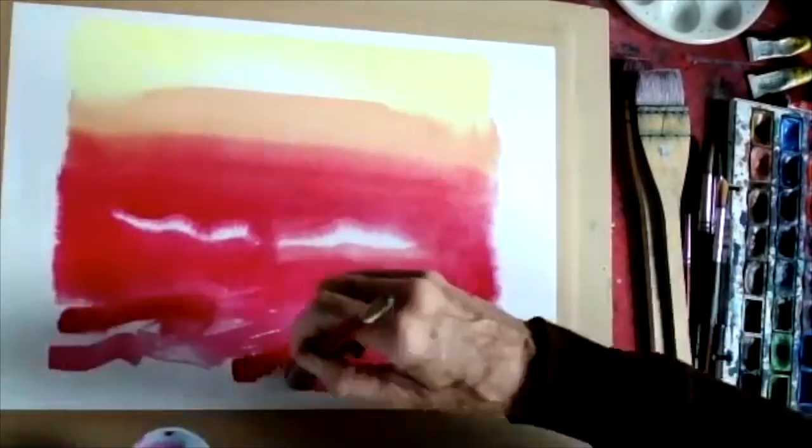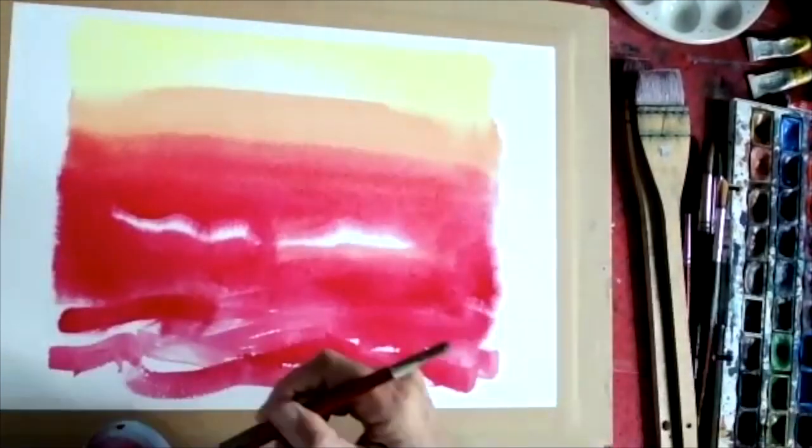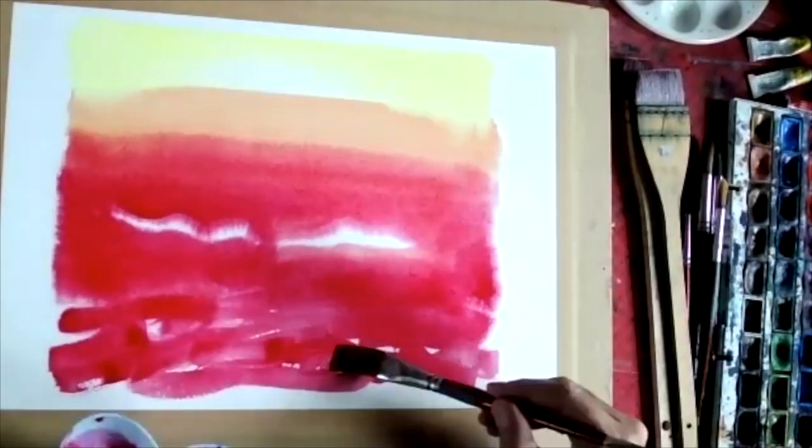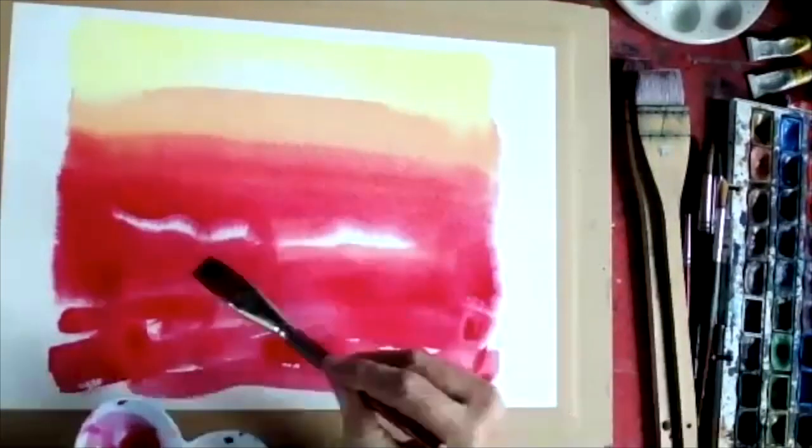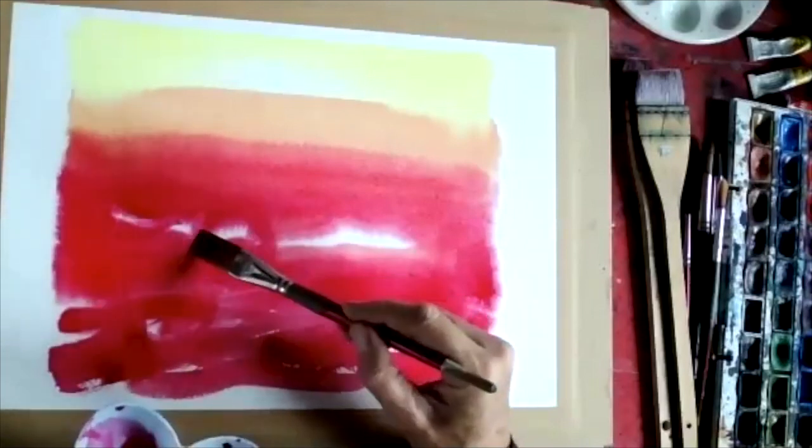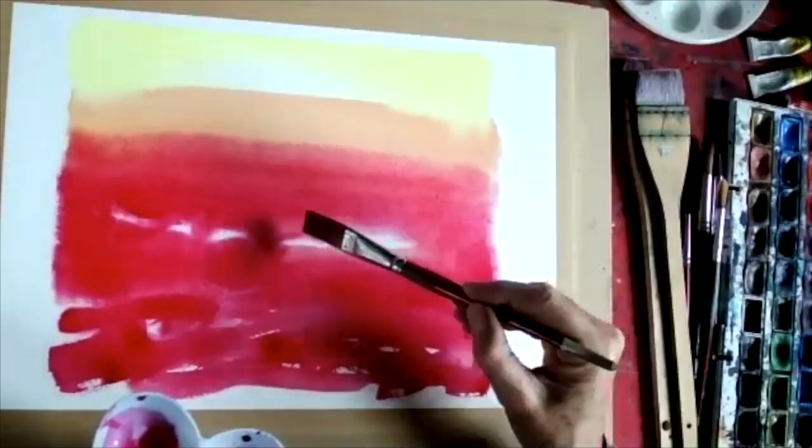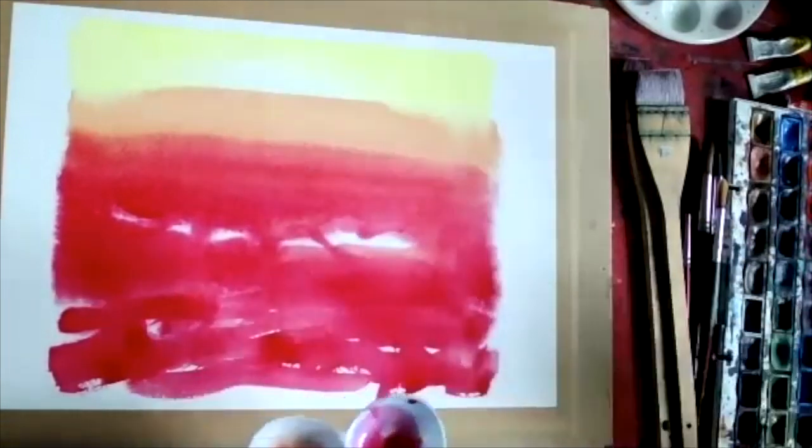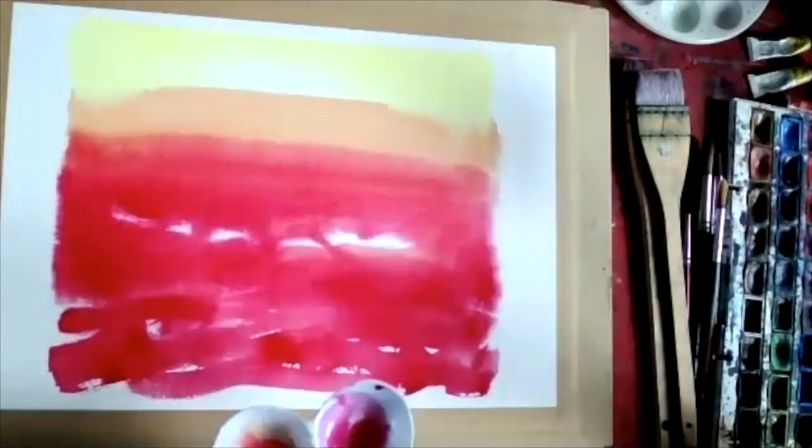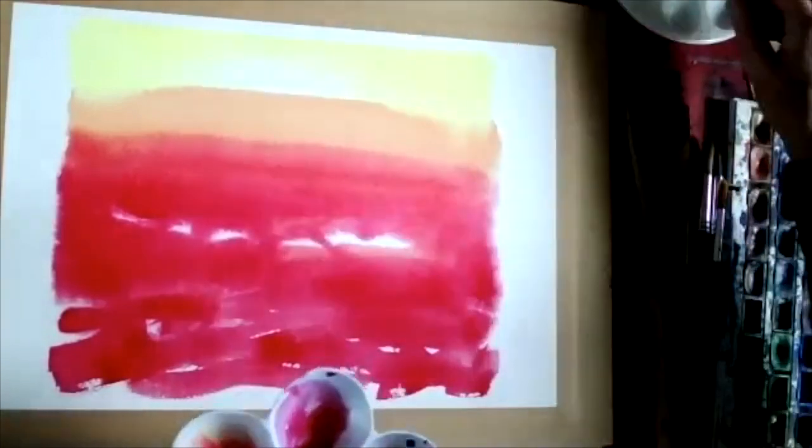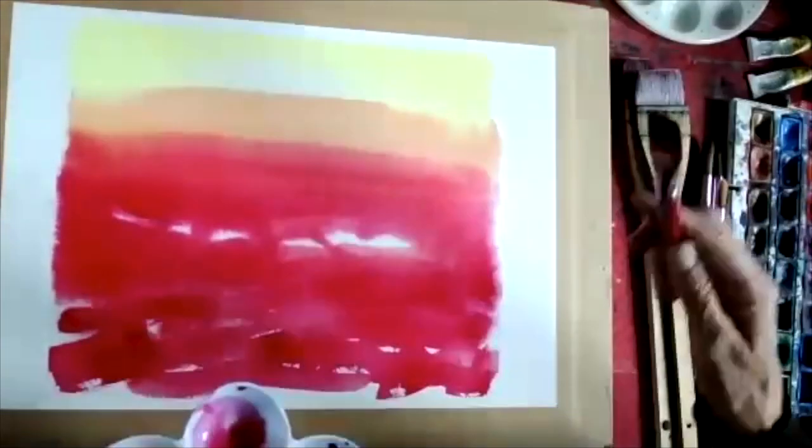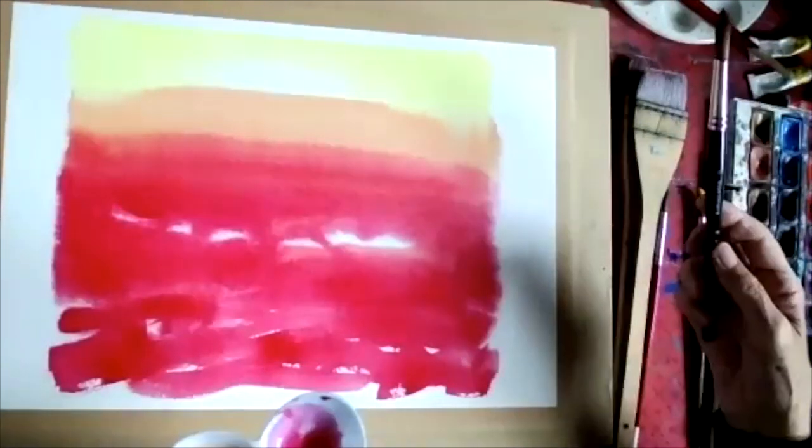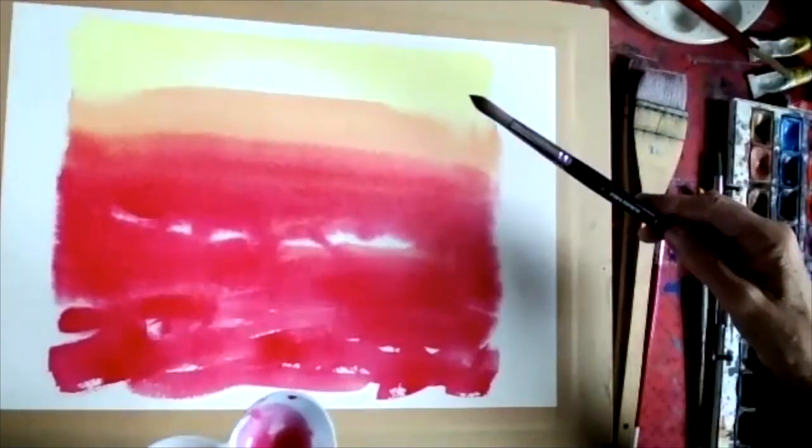It's already started to dry right down here, but that doesn't matter. I'm going to re-wet it with a lot of pigment. I'll keep that brush flat for the red, and I'm going to take a large round, a number 12 round.